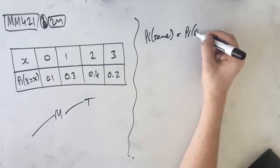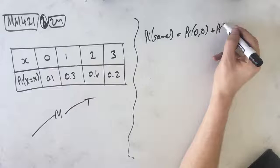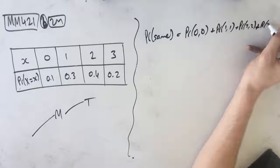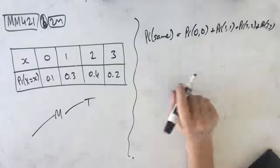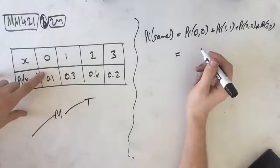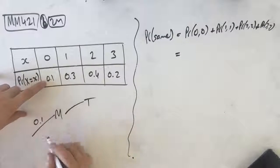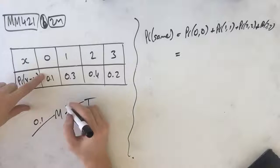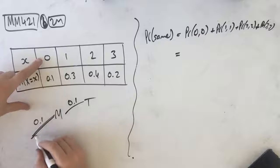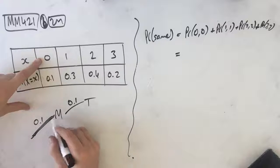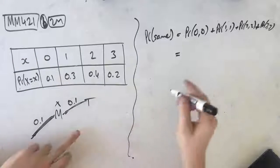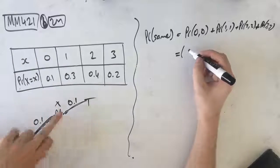So we've got probability of the same is the probability of zero on both days, one on both days, two on both days, or three on both days. Now, the probability that he has zero on one day is 0.1. The probability that he has zero on the next day is also 0.1. So the probability that he has zero rude customers on both days is 0.1 times 0.1. If you think about it in terms of a tree diagram, it'll be easier like that.